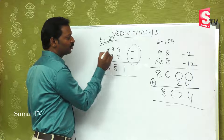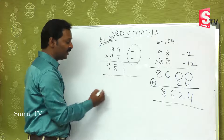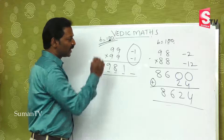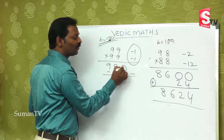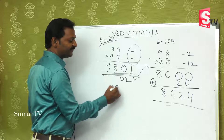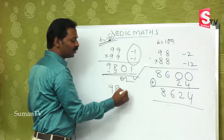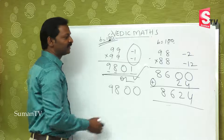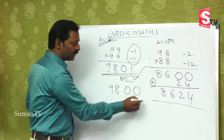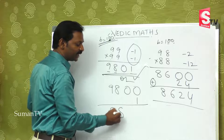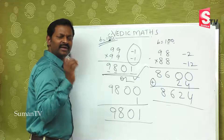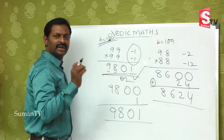Because in the question there are 2 digits and the answer is 4 digits. So minus into minus is plus, 1 × 1 is 1, and place one zero — so 01. The final output is 9801. How many seconds does it take? Not even 10 seconds.